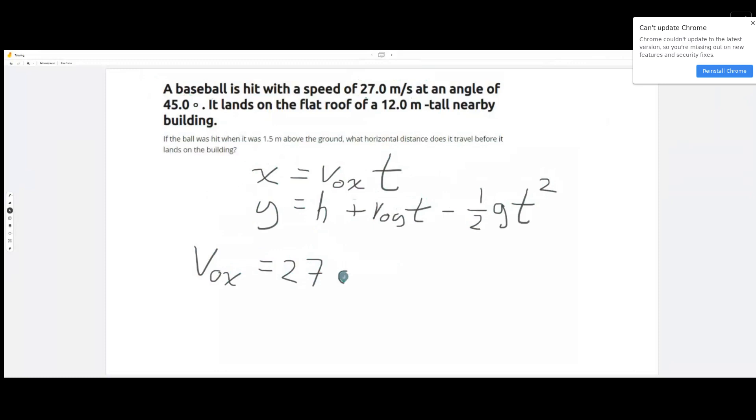That'll be the same for the initial y velocity, so that'll be 27 sine 45 degrees. Now that we have the velocity broken down into its two components, we can plug those components into the equation and solve for our specific height of 12 meters.